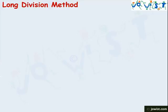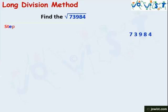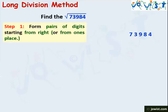Let's understand the process to find the square root through long division method. We take the number 73,984. The first step is to form pairs of digits starting from the right, or from the ones place. There are two pairs and 7 is left alone. Each pair and remaining digit is called a period.